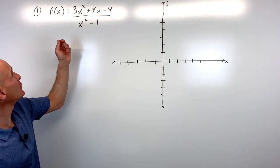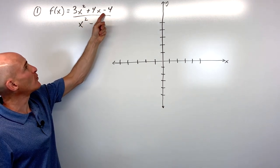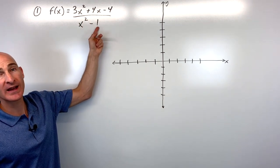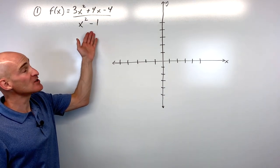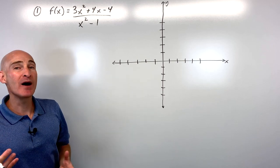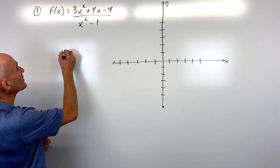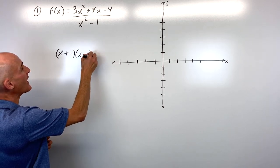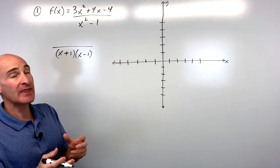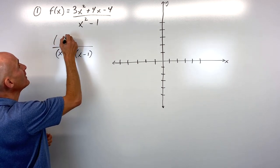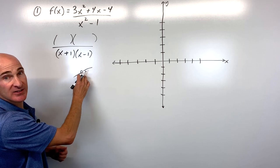Number one: f(x) = (3x²+4x-4)/(x²-1). When graphing rational functions, the first thing you want to do is factor as much as you possibly can. The reason we do that is because if we have factors in the numerator and denominator that cancel out, that tells us there's going to be a hole in the graph — a removable discontinuity.